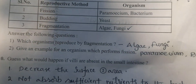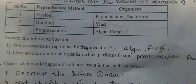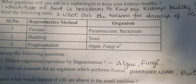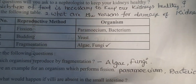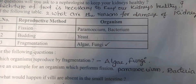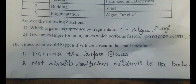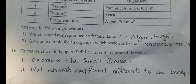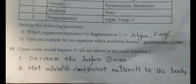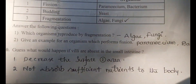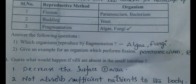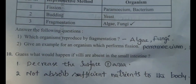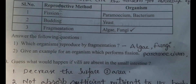Sub-questions: which organisms reproduce by fragmentation? Answer: algae and fungi. Give an example of an organism that performs fission. What would happen if villi are absent in the small intestine? Consequences: first, surface area decreases; second, the body cannot absorb sufficient nutrients.